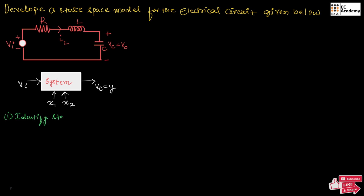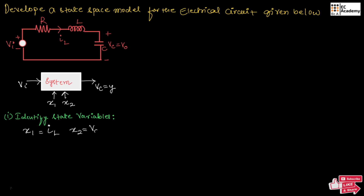First, we need to identify the state variables. Here we can identify two variables. The first one is the current through the inductor and the second one is the voltage across the capacitor. We will choose these two because IL as well as Vc are the key quantities that define the energy stored in the system. So we will take X1 as IL, which is current through the inductor, and X2 as Vc, which is voltage across the capacitor. These are the state variables.